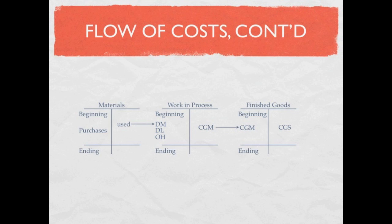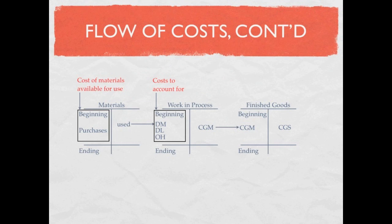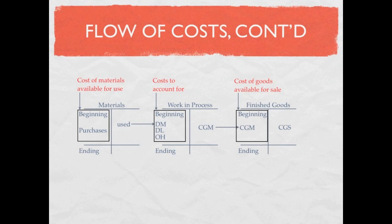Just a little bit more terminology. Your beginning materials plus purchases is called your cost of materials available for use. Your beginning work in process plus your product costs — materials, labor, and overhead — is called your costs to account for. Your beginning finished goods plus your cost of goods manufactured is called your cost of goods available for sale.